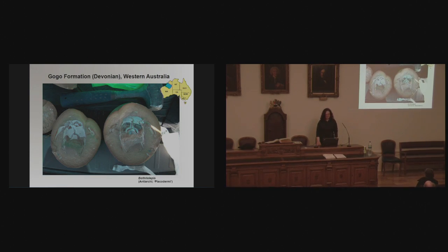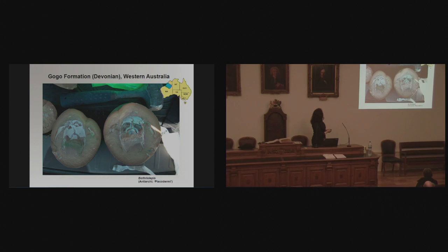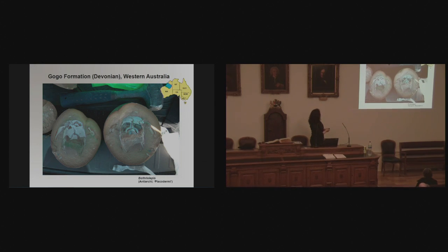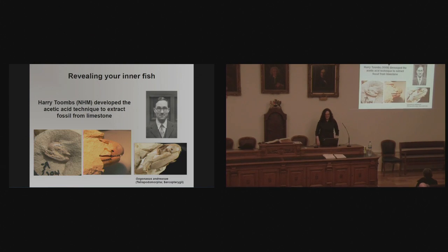We also collected a lot of placoderms. This shows the general morphology of this group known as the antiarchs. That fossil has been split in half, and unfortunately it's broken through the trunk shield. Placoderms are characterized by having their head and part of their body covered in thin bony plate — this is what we see here. That would definitely be a specimen to take back to Perth to process.